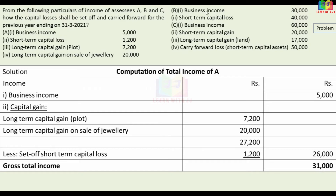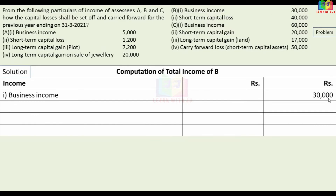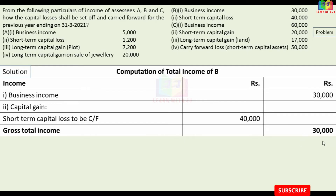For Assessee B, it is straightforward — there are two items: one income and one loss. Business income is 30,000. The short-term capital loss cannot be adjusted against business income; it can only be adjusted against capital gain income. The carry-forward amount is 40,000, which can be adjusted against long-term or short-term capital gain in subsequent years. The gross total income for Assessee B is 30,000.